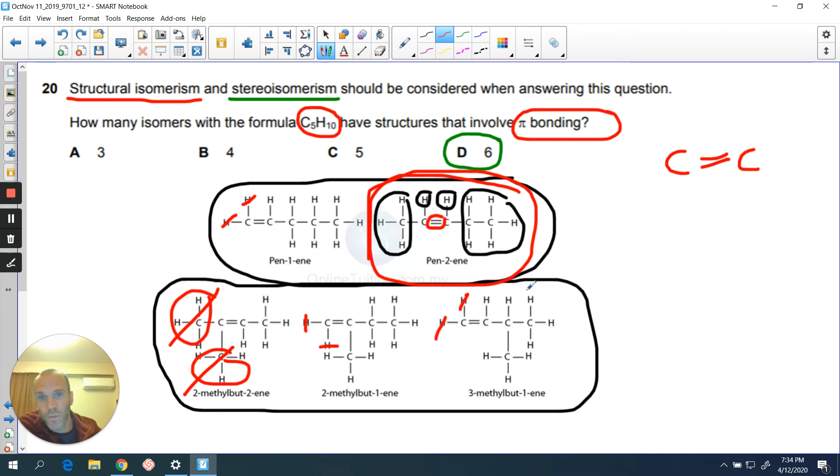So the only one that's going to have cis-trans form are the ones that have got essentially this kind of formation. You've got basically something different on your four things that attach to your two carbons that are double bonded together. So you could think of it as having A and B and C and D, or you could think of it as having A and B and A and B. But basically, the two things on either side must be different or you can't have cis-trans isomers.